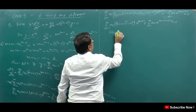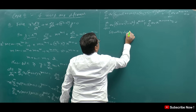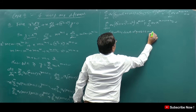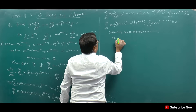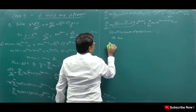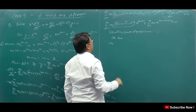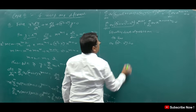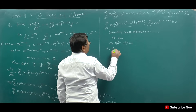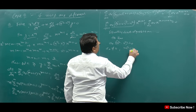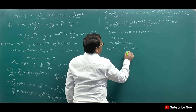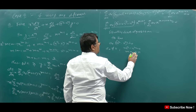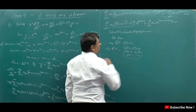Equating the least degree term to zero — putting r = 0 — we get: a₀·(m² − n²) = 0. Since a₀ ≠ 0, this means m² − n² = 0, which gives us m = +n and m = −n. These two values are different, confirming unequal roots.